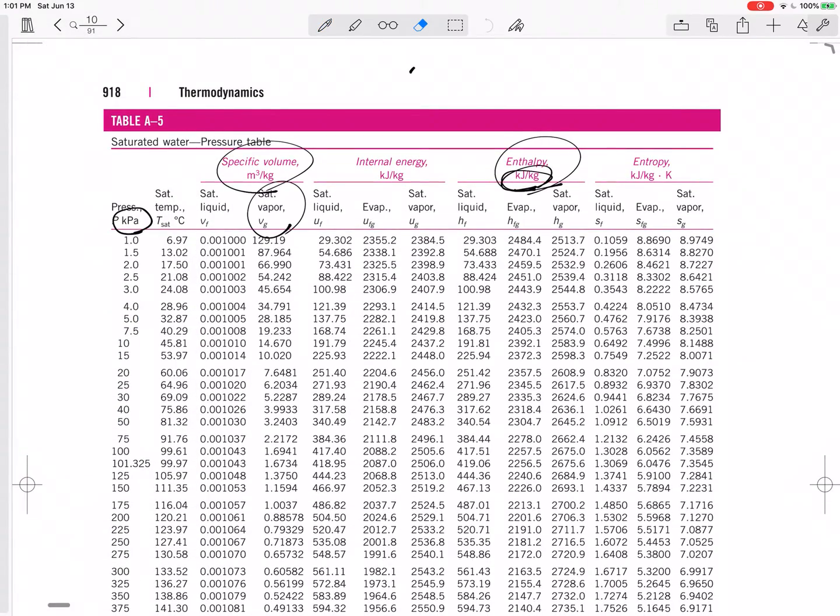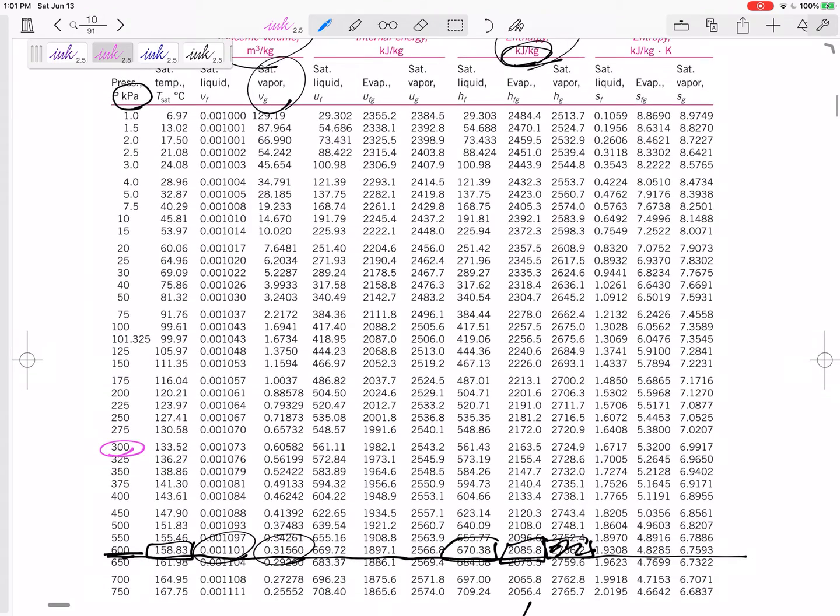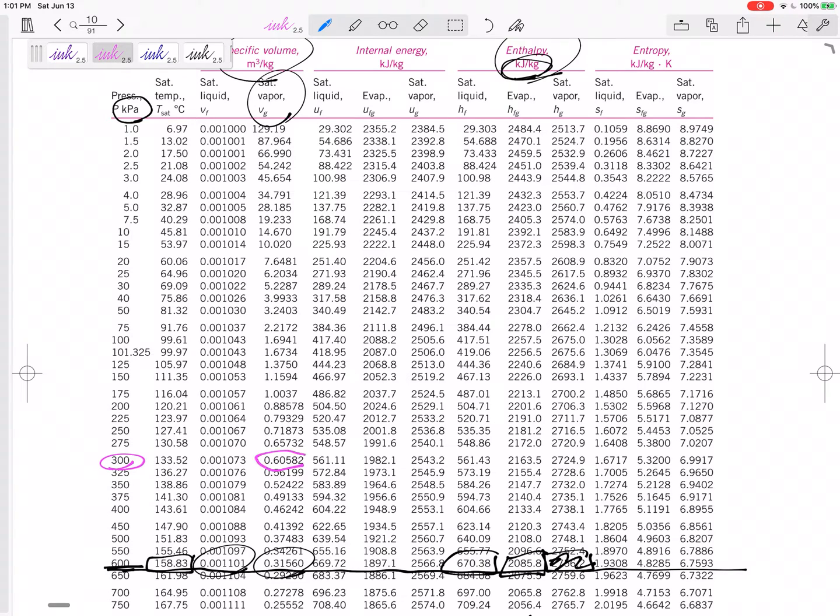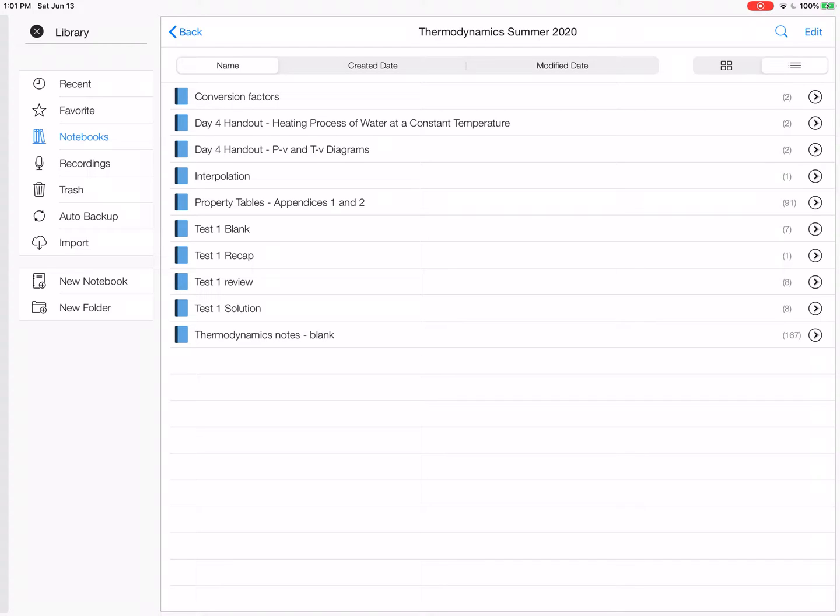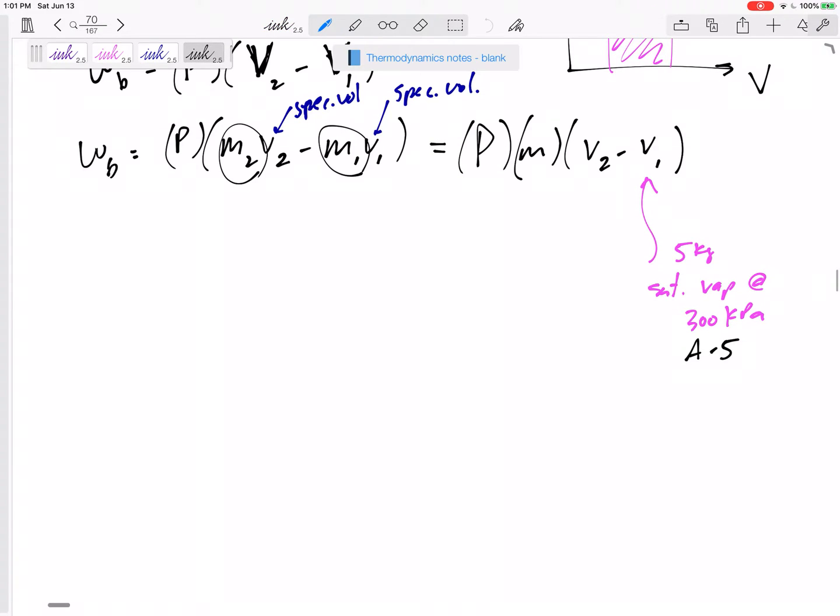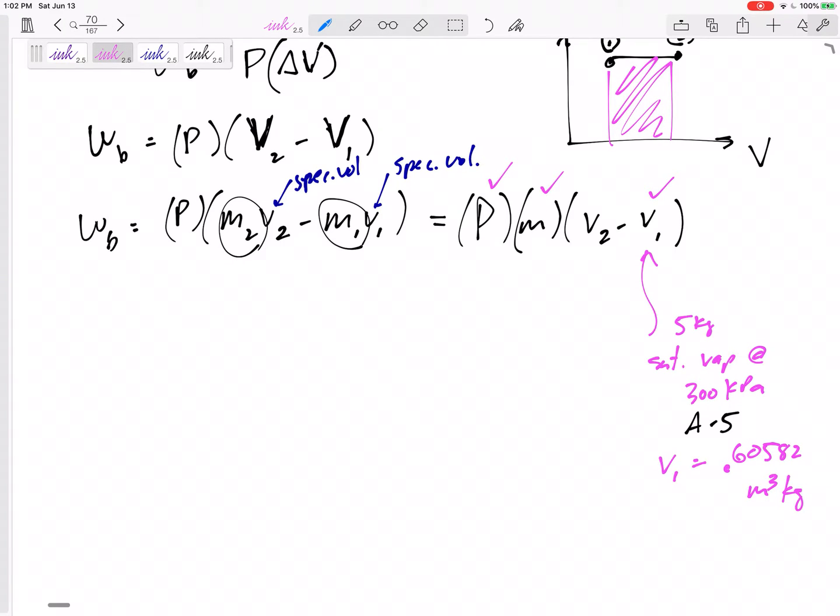Here it is. It's saturated vapor. That is the specific volume right there, 0.60582. I know we're in a new chapter, we're done with test 1, but you still have to use those property tables. The specific volume at state 1 is 0.60582 meters cubed per kilogram.